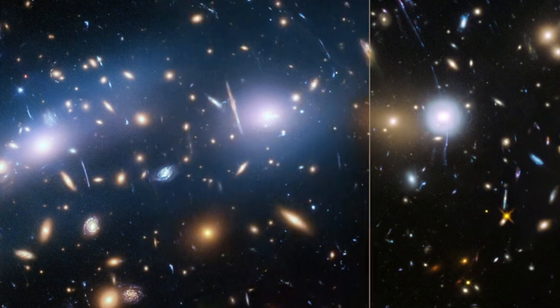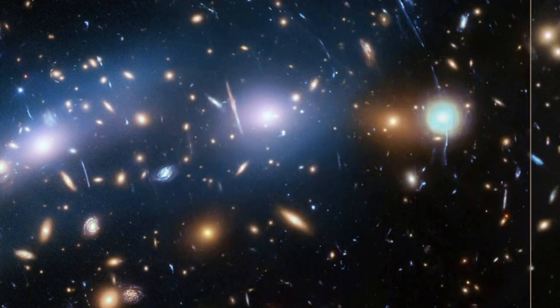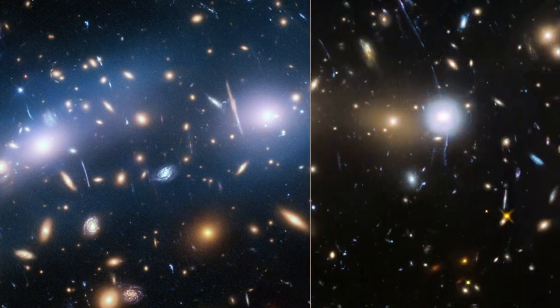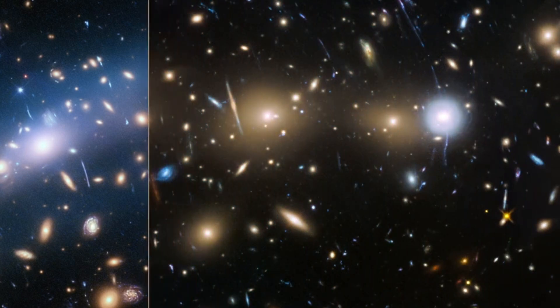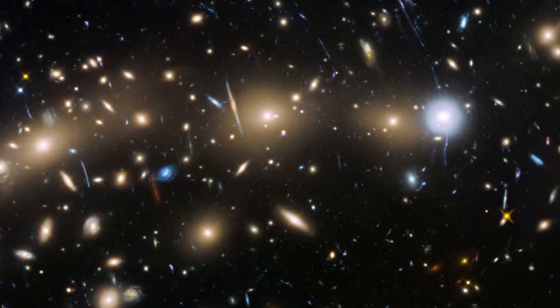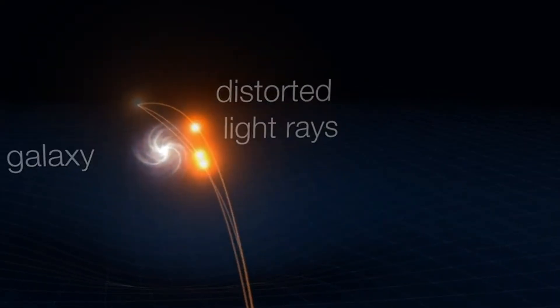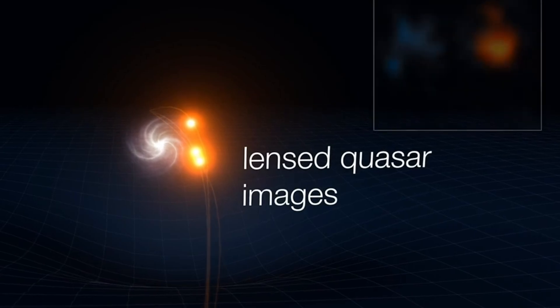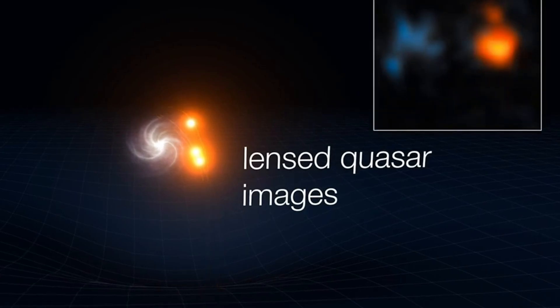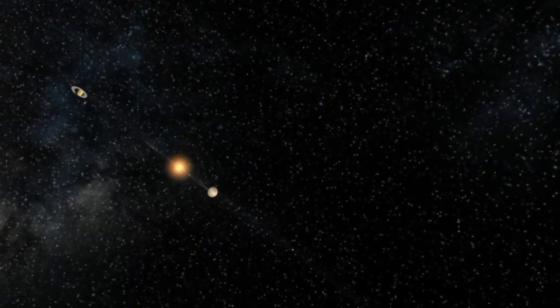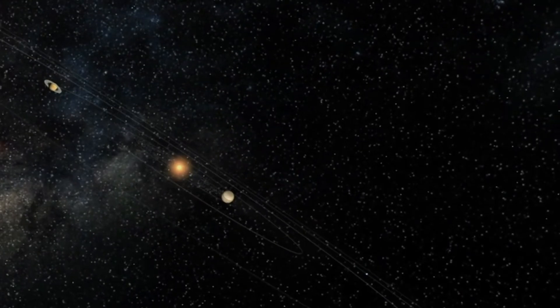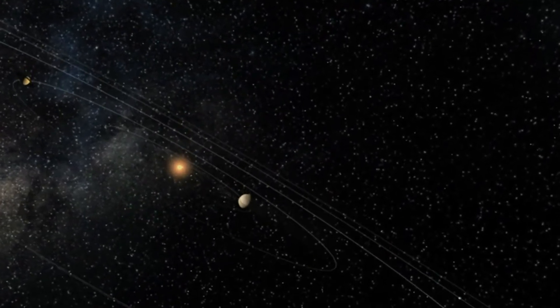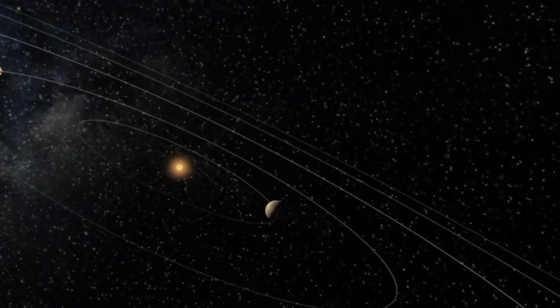There's a good chance that Earendel is a population 3 star if it's a single high-mass star. However, if follow-up studies find that Earendel is only made up of primordial hydrogen and helium, it would be important evidence for population 3 stars. Population 3 stars are thought to have played a crucial role in the enrichment of the early universe, seeding it with the heavier elements essential for the formation of planets and eventually life as we know it.